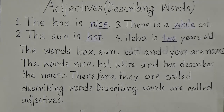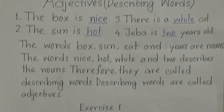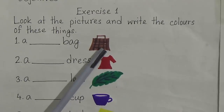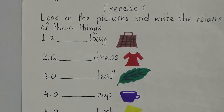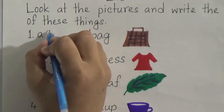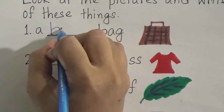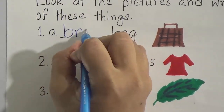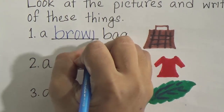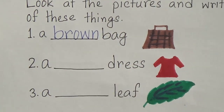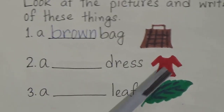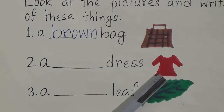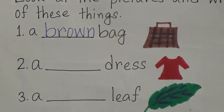Number one: a blank bag — what is the color of this bag? The color of this bag is brown. We will write here: brown (B-R-O-W-N). Number two: a blank dress — what is the color of this dress? It's red. We will write here: red.